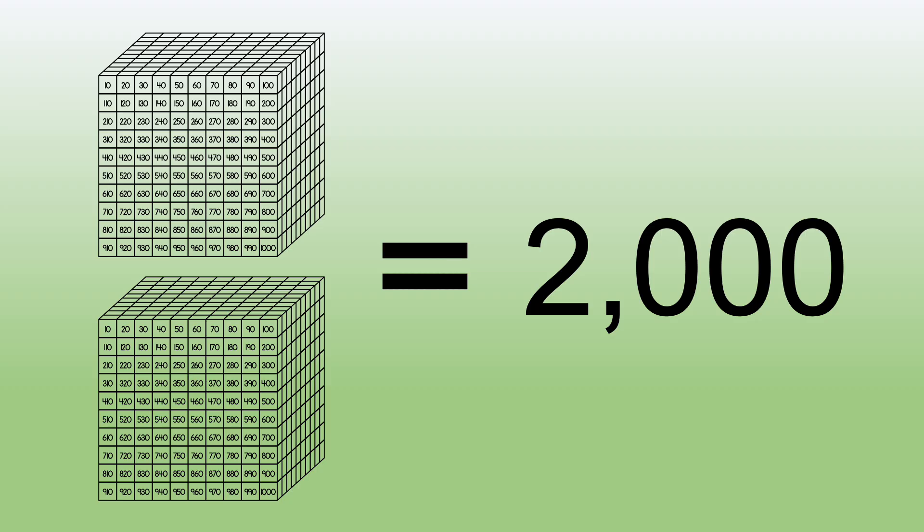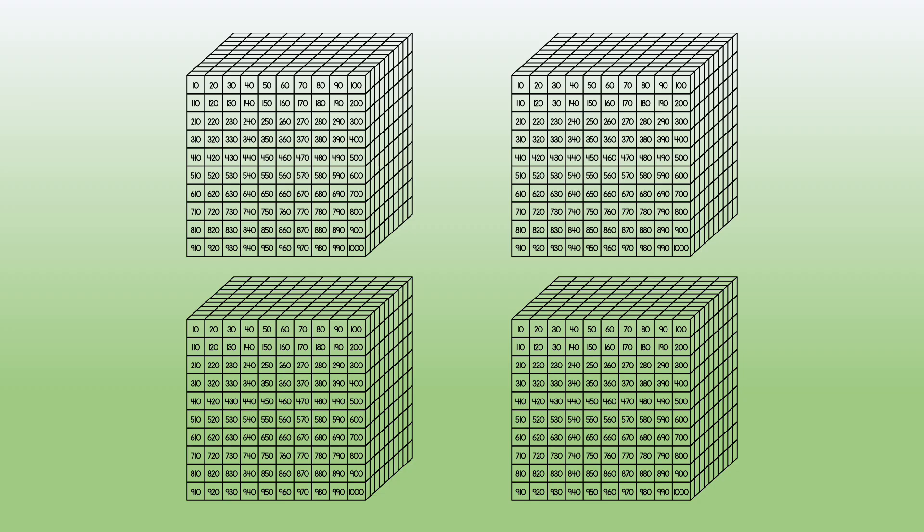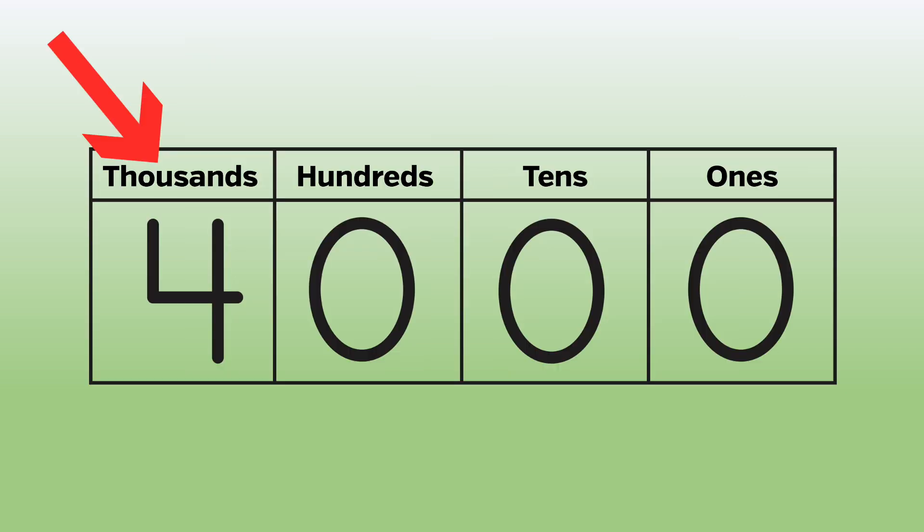Two cubes equals 2,000. When we have cubes, we can skip count by 1,000. We have four cubes here. 1,000, 2,000, 3,000, 4,000. The number of cubes goes here on a place value chart.